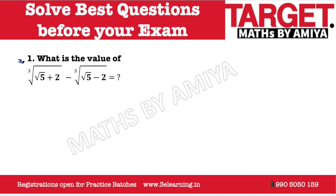Okay, before solving this question, you must know this one is an irrational number, and this one is also an irrational number. Irrational plus or minus irrational could be either rational or irrational. So assume this one is x, where x could be rational or irrational.